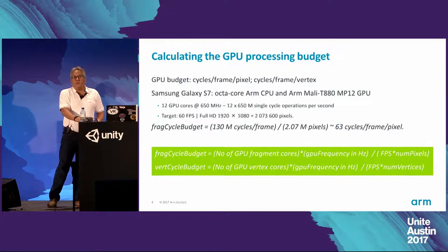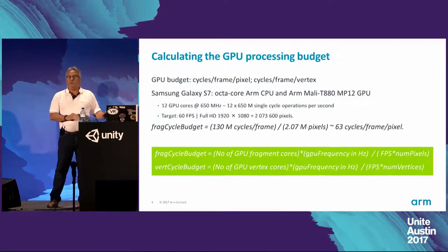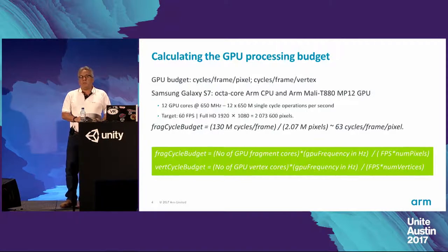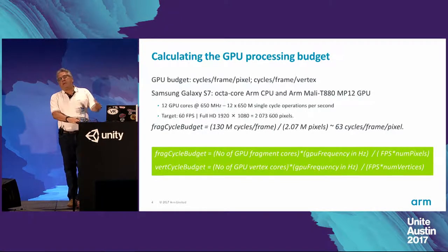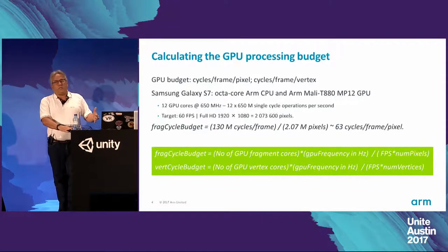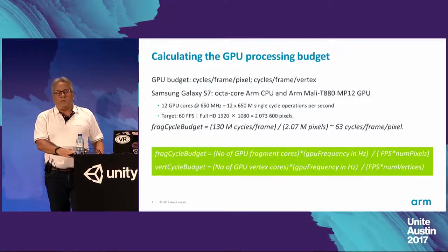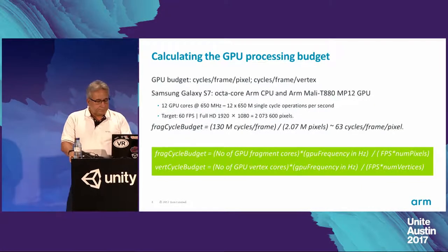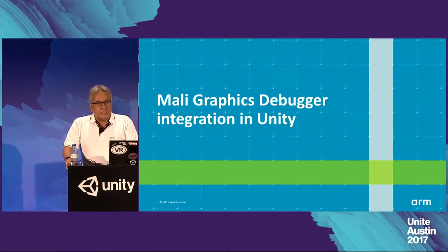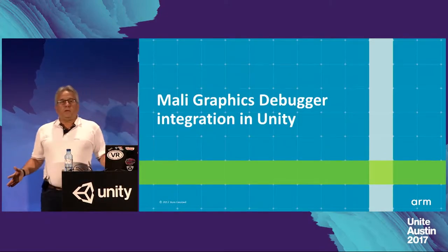Those are the simple formulas we use when calculating our GPU fragment and vertex cycle budgets. For the vertex cycle — the GPU vertex budget — we divide by the number of vertices. So at this point, the next step is to know what amount of cycles our application is actually consuming when running on the device.